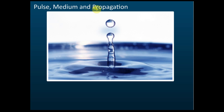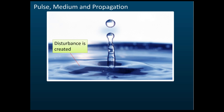Let's talk about pulse, medium, and propagation. If you drop something into water, it produces a disturbance. This disturbance is called a pulse. If you have just one disturbance, it's called a pulse.